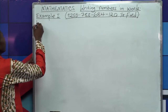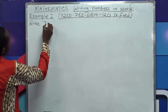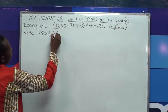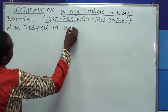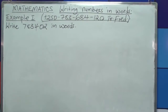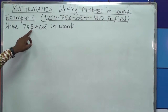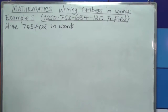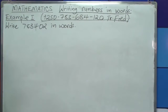We shall begin with the first example. Write 7, 8, 3, 4, 0, 2 in words. Let's look at Example 1. They have given us a number and said write 783402 in words.